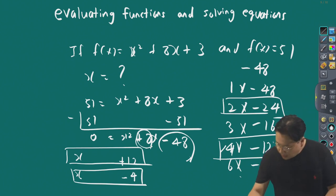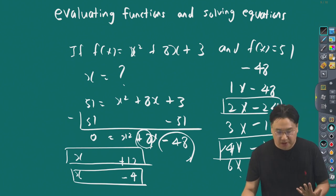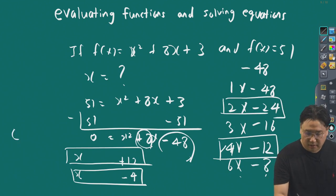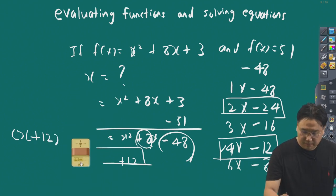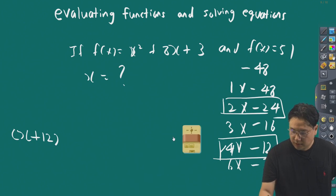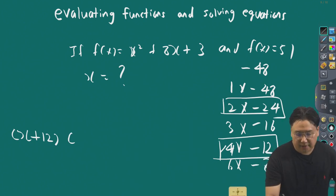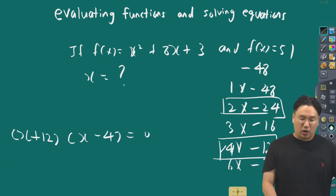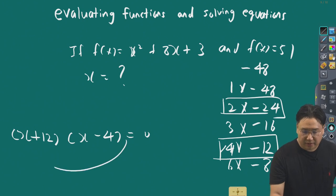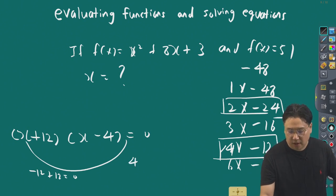By using the zero product property, we have (x plus 12)(x minus 4) equals zero. To get zero, we can substitute x equals minus 12: minus 12 plus 12 equals zero. Or if x equals 4: 4 minus 4 equals zero. The answer is x equals 4.